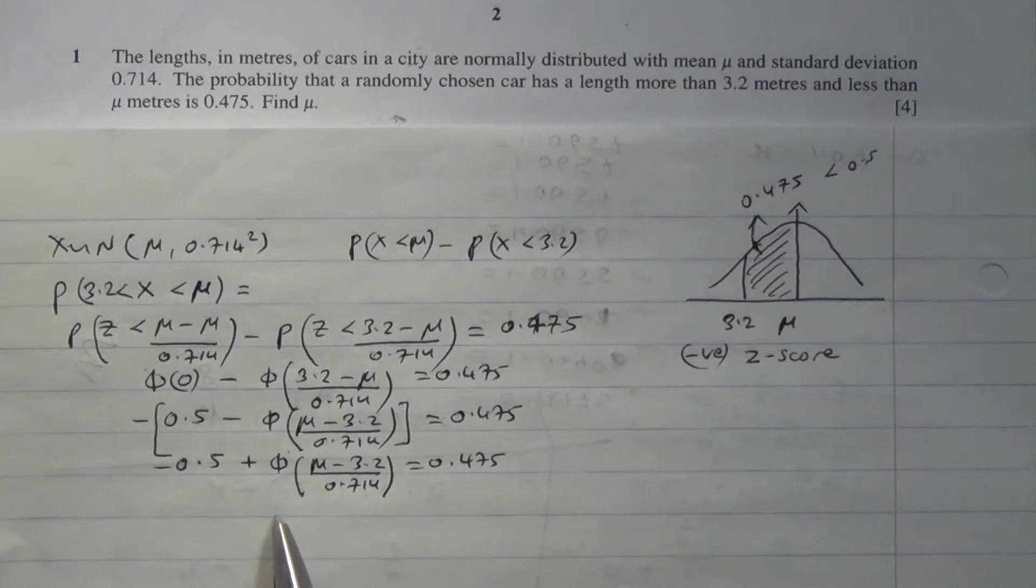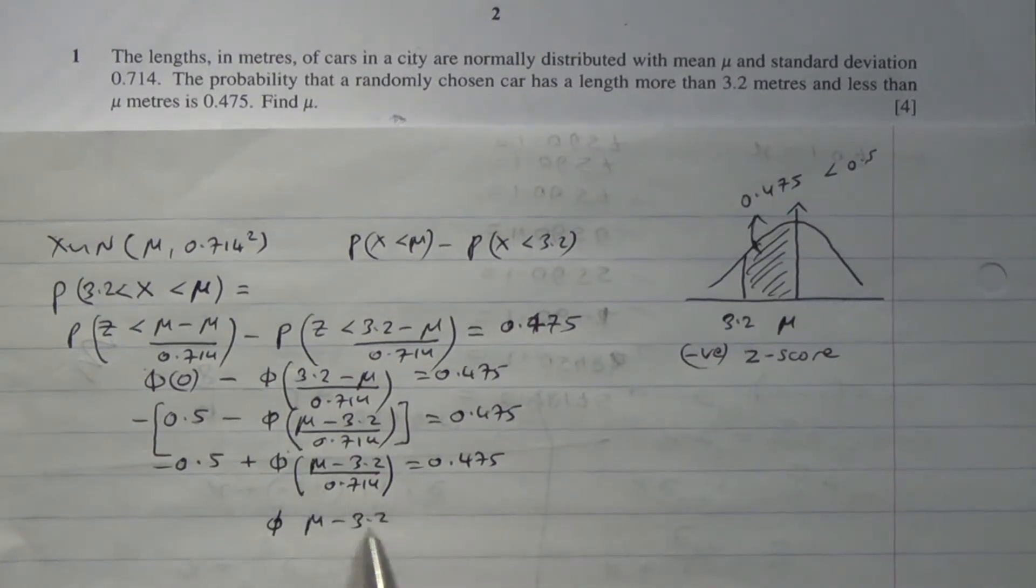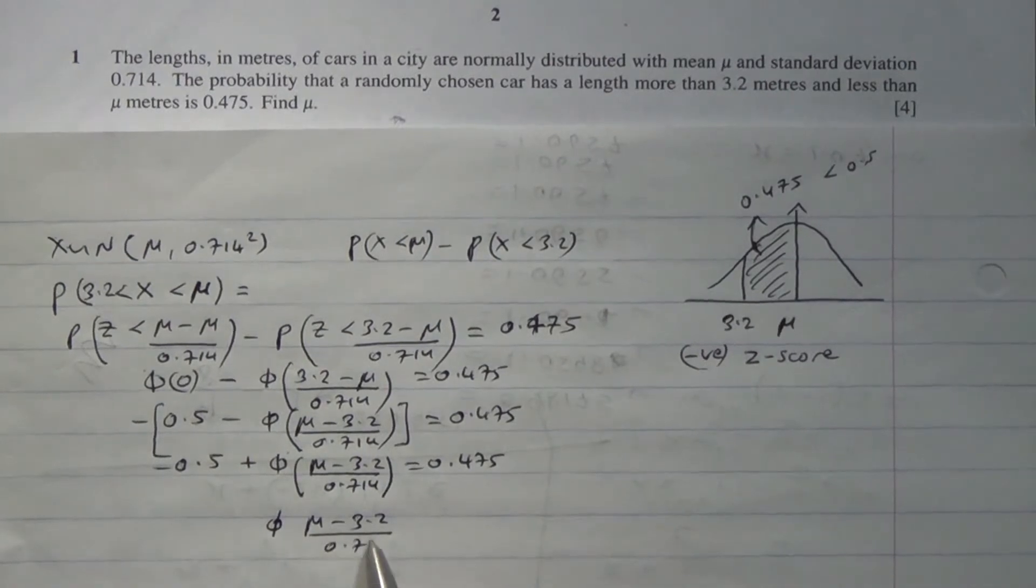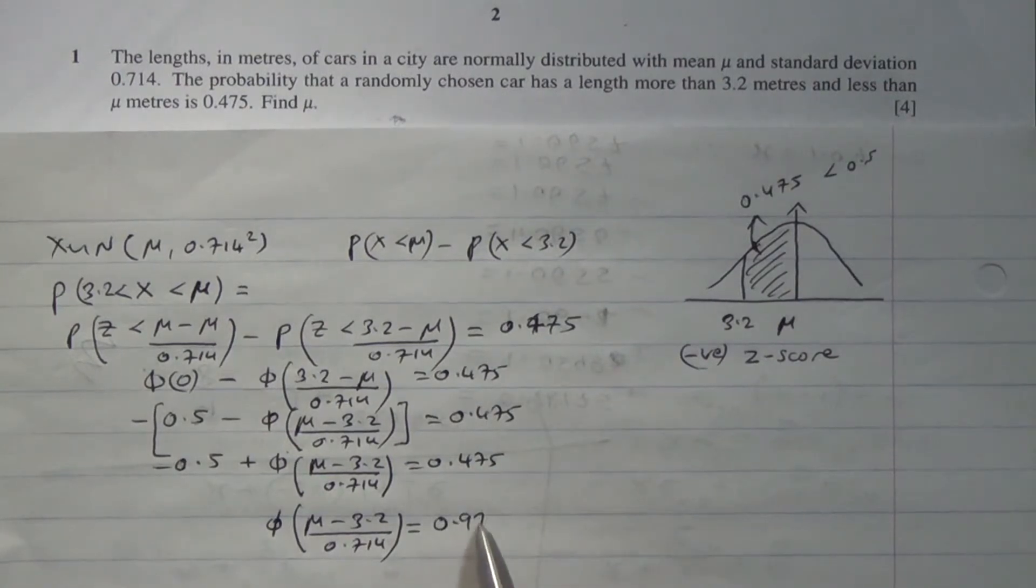the phi of mu minus 3.2 divided by 0.714 is equal to... The minus 0.5 goes on the other side becomes plus, so 0.975.